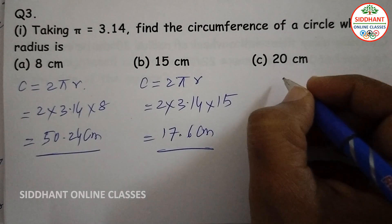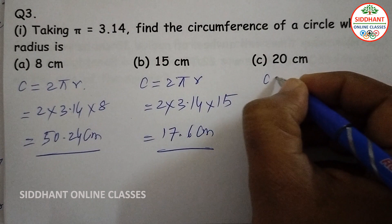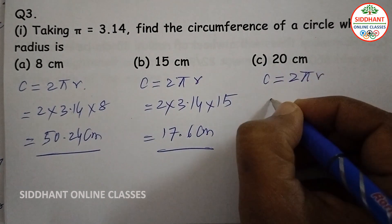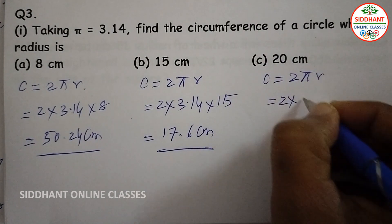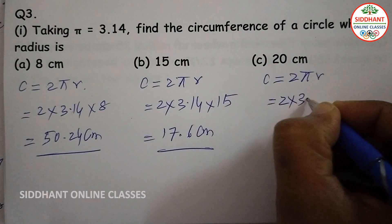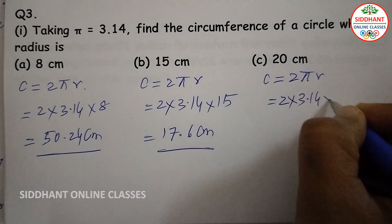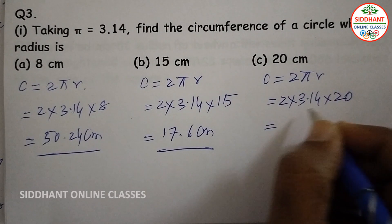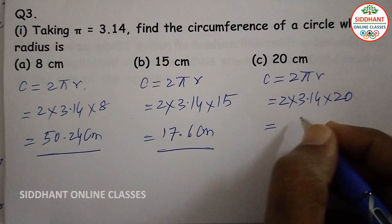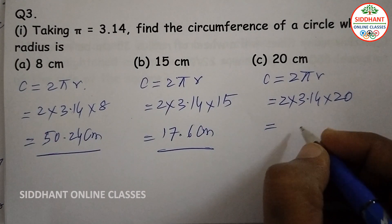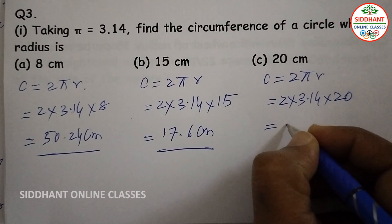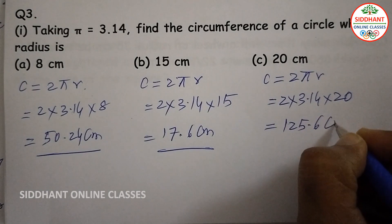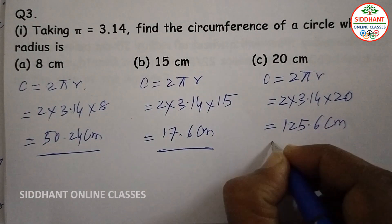Third one, radius 20 centimeter: circumference equals 2 pi r, here 2 into 3.14 into 20 equals 40 into 3.14, so that will be 125.6 centimeters.